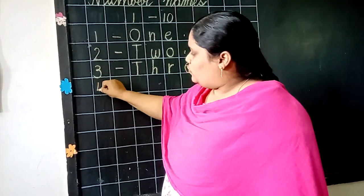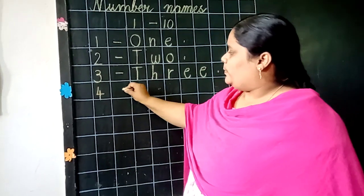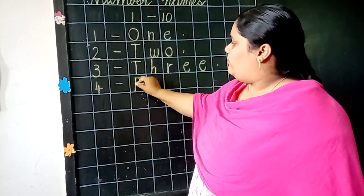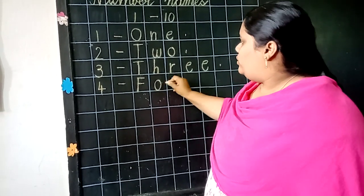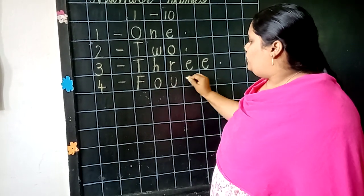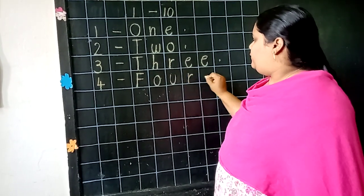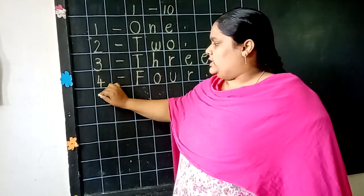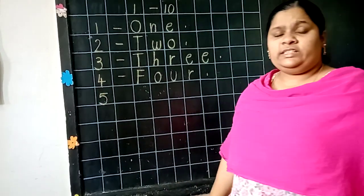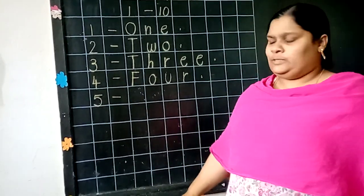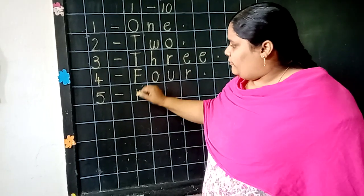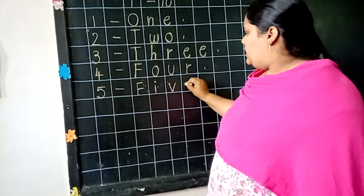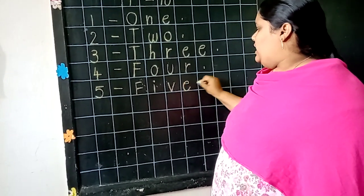Next. What is this? 4. What is the spelling of 4? F, O, U, R. 4. Next. What is next? 5. What is the spelling of 5? F, I, V, E. 5.